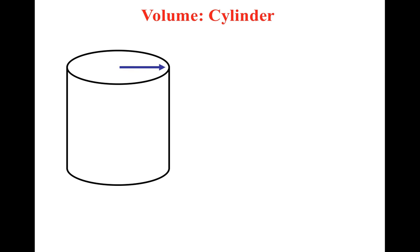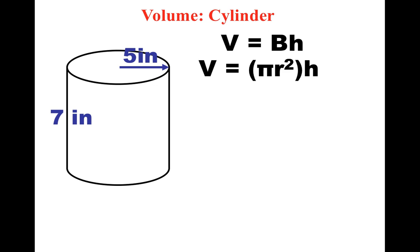All right, here we go. So let's say I had a radius of five inches. Let's say I had a height of seven inches. In order to solve this, step one, write the formula. Since we're dealing with the cylinder, the base area is a circle. So we have pi r squared for our base area. And then watch us plug in the numbers.